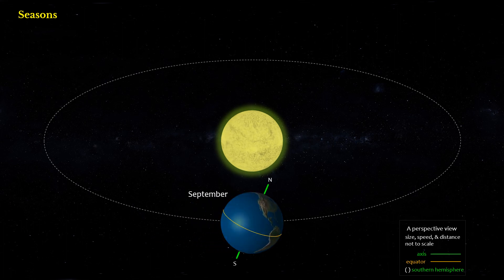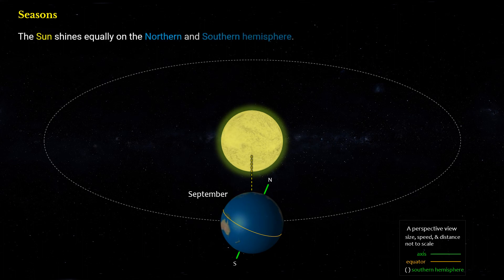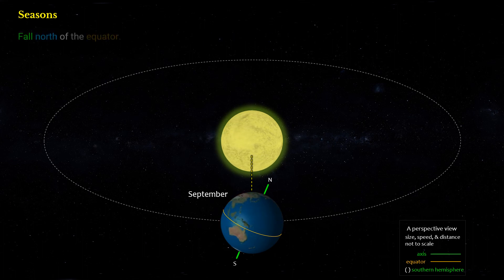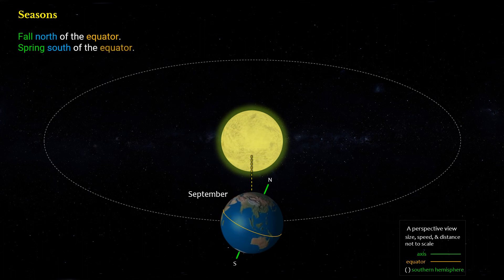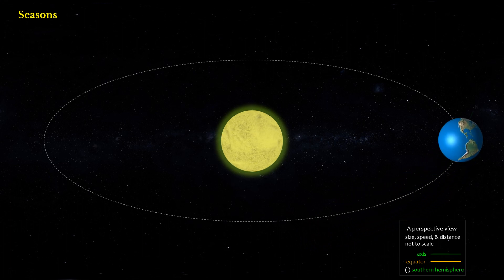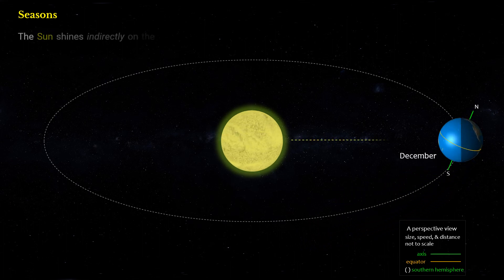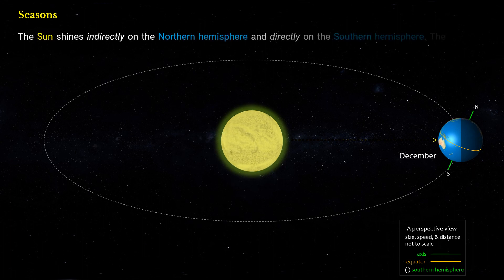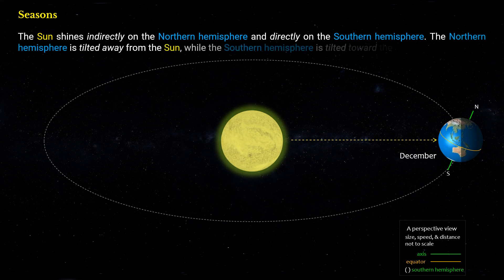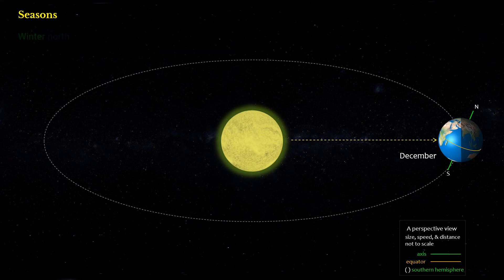In September, the Sun shines equally on the Northern and Southern Hemisphere — fall north of the equator, spring south of the equator. In December, the Sun shines indirectly on the Northern Hemisphere and directly on the Southern Hemisphere. The Northern Hemisphere is tilted away from the Sun, while the Southern Hemisphere is tilted toward the Sun — winter north of the equator, summer south of the equator.